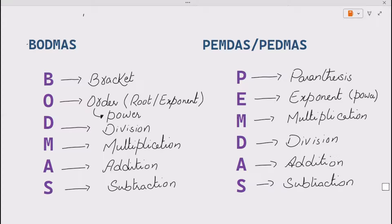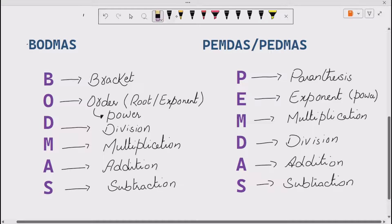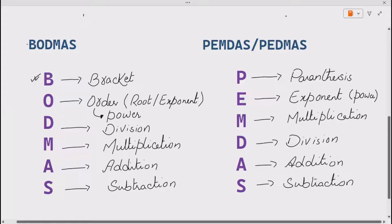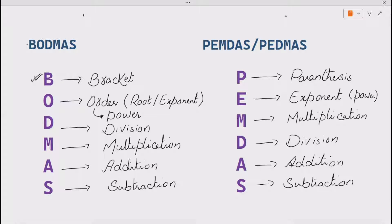BODMAS says you have to first solve the bracket in any arithmetic expression. After the bracket you have to solve any order, i.e. powers, if they are present in the expression. And after solving powers you have to solve the four basic operations: division, multiplication, addition, and subtraction, in that order.